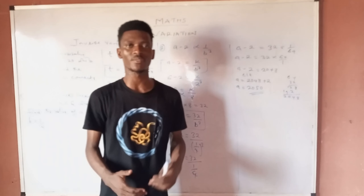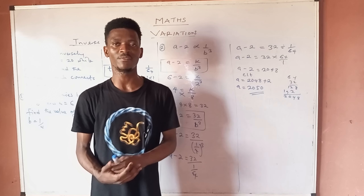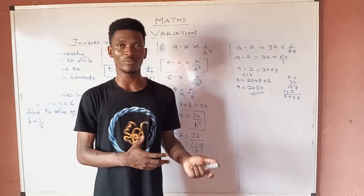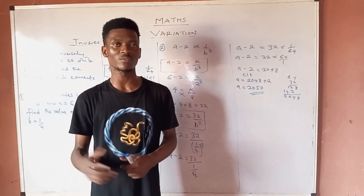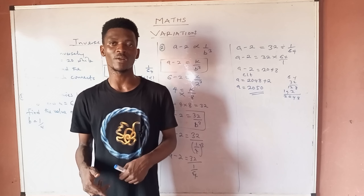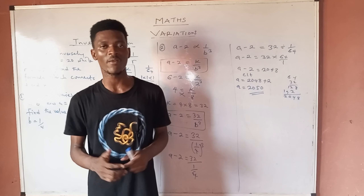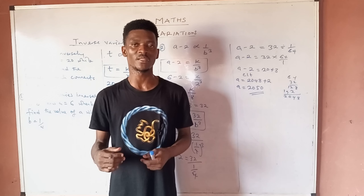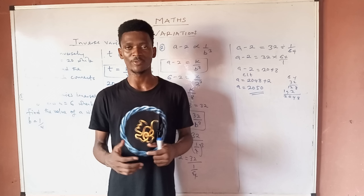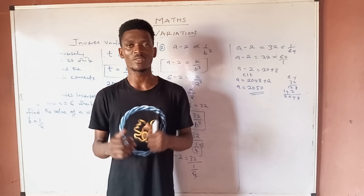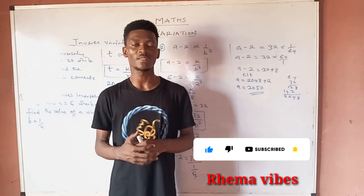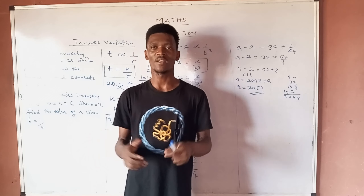I hope you've understood everything about Direct Variation and Inverse Variation. Remember: for direct variation, an increase in x leads to an increase in y. For inverse variation, an increase in x leads to a decrease in y, and vice versa. In our second video, we'll look at Joint Variation and Partial Variation with related questions. If you liked this video, give a thumbs up, subscribe, and share so your friends can also benefit. Thanks and God bless.